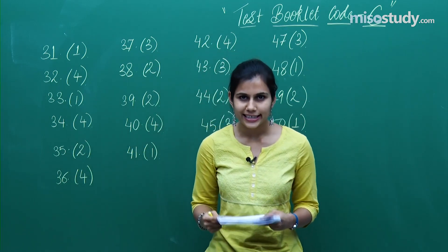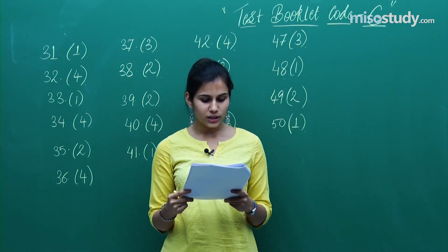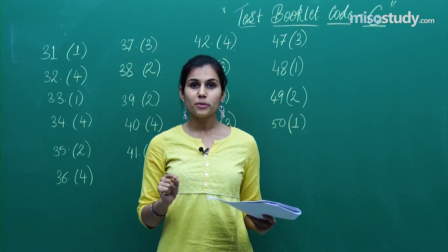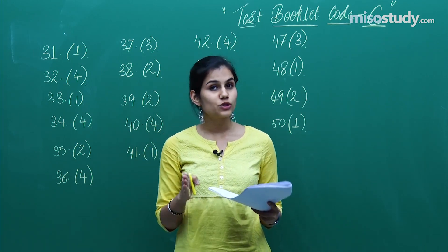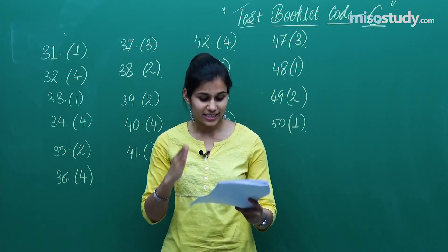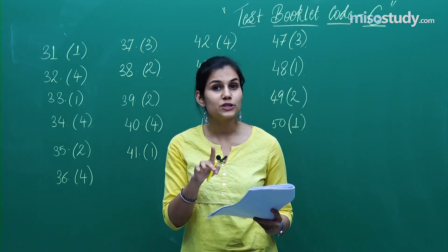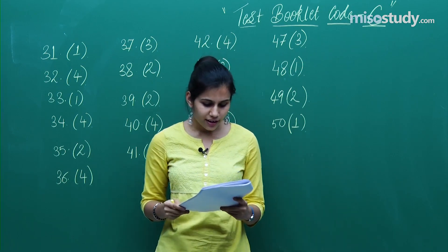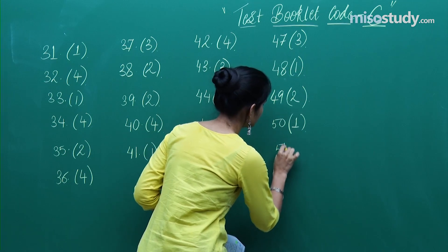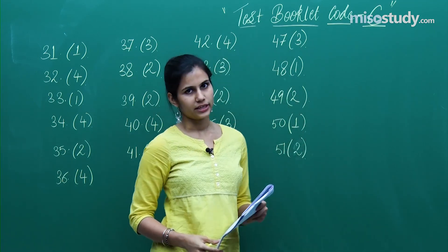Question 51 is again from conic sections, 11th standard. You are given two curves intersecting each other at right angles. The angle of intersection formula could be applied here; since the lines intersect at right angles, the product of their slopes is -1. This question delivers the answer as 9/2, so question 51 — 9/2, which is the second option — is the correct one.